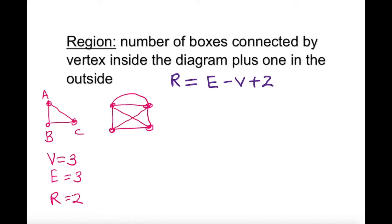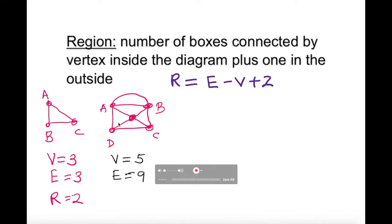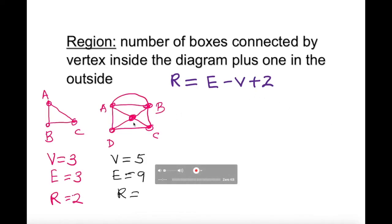Let me create another example: a, b, c, d. How many vertices? One, two, three, four, five — five vertices. How many edges? Let's count: one, two, three, four, five, six, seven, eight, nine edges. How many regions? Looking at the diagram: one, two, three, four inside, and one outside — so six regions.